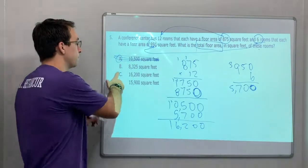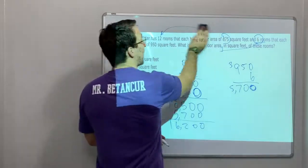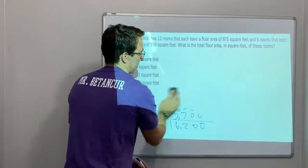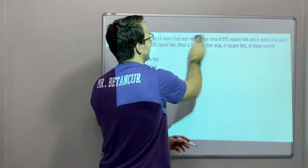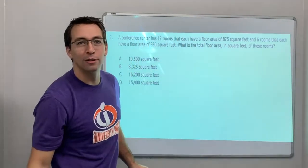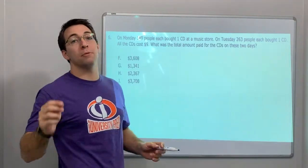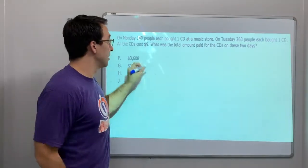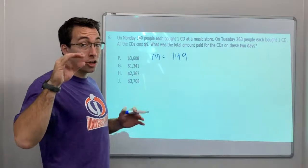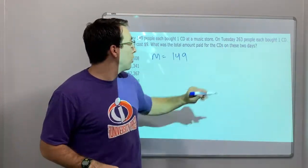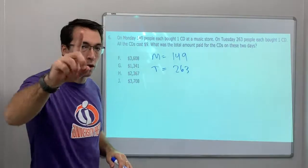Now add 5,700 plus 10,500: that's 16,200. Answer C — they tried to trick you with answer A, but they can't trick us. Number six: on Monday, 149 people each bought one CD, so Monday equals 149. On Tuesday, 263 people each bought one CD.